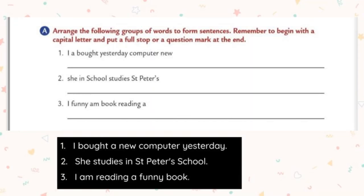Third: 'Tom Hanks is a well-known actor.' Who is a well-known actor? Tom Hanks — that is the subject. 'Is a well-known actor' is the predicate. Fourth: 'The car is driving at a great speed.' The subject is 'the car.' 'Is driving at a great speed' is the predicate. Note: the subject usually comes before the predicate, but sometimes it may come after.